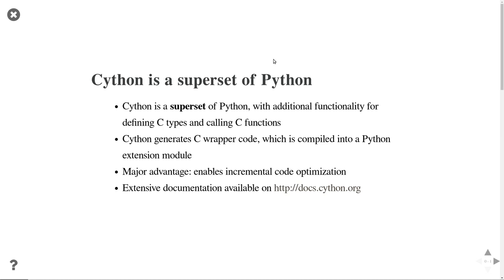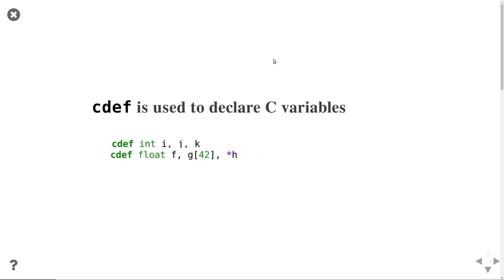I'll just give you an introduction today. Here are some of the new language features available when you use Cython. Most importantly, you can now specify the types of variables in your program. For instance, if you have three integers i, j, and k, you can tell the language that these are integers by writing 'cdef int' followed by the variable names.